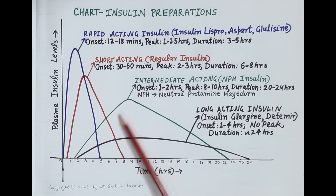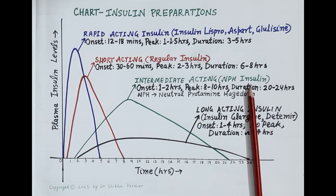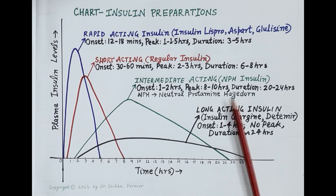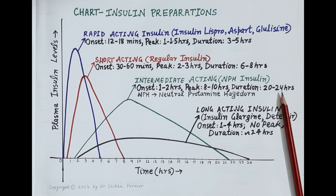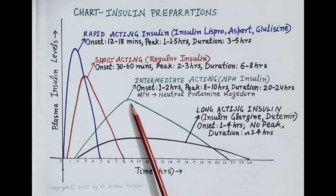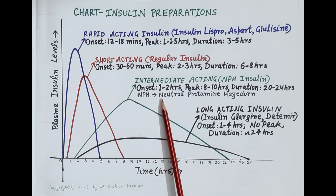The green color graph is for intermediate acting insulin — NPH insulin, where NPH stands for Neutral Protamine Hagedorn. It is termed intermediate acting as its duration is between 20 to 24 hours — neither too long nor too short. It is absorbed slowly, with an onset within 1 to 2 hours of administration and peak seen in 8 to 10 hours. It is usually administered twice daily and controls blood glucose between meals and overnight.